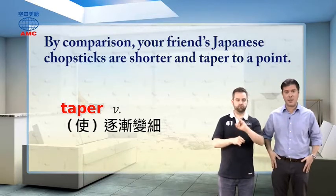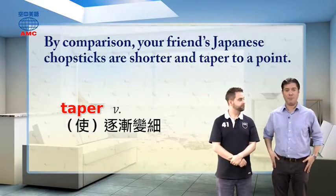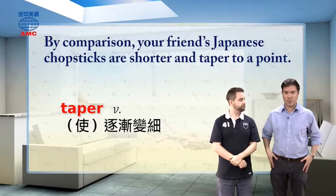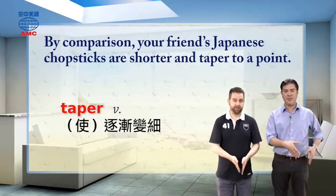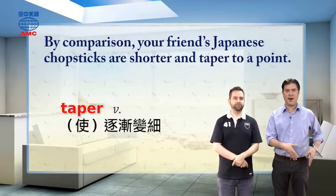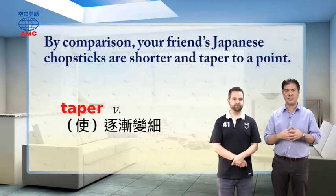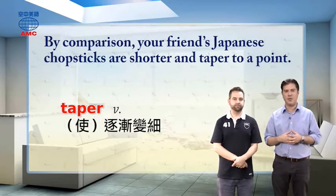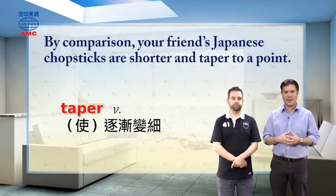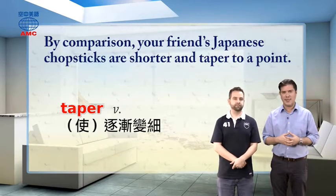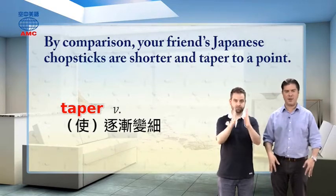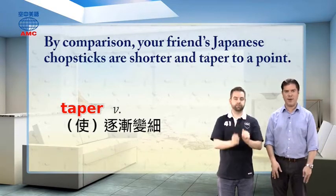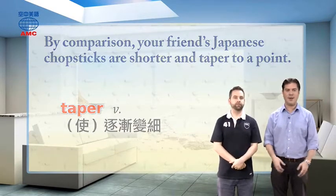We might also talk about pants that taper. Some people like to have their pants be much narrower at the bottom than at the top — that's a certain style of pants that tapers down at the bottom, wider at one end and narrowing at the other.